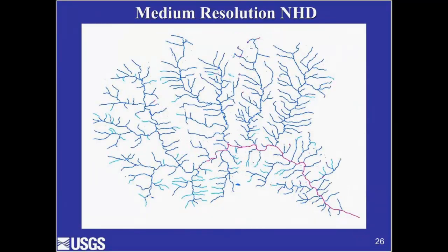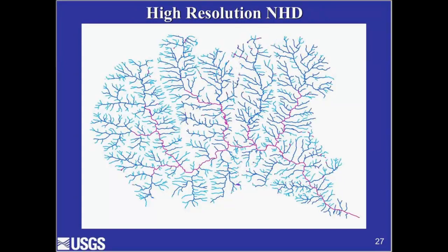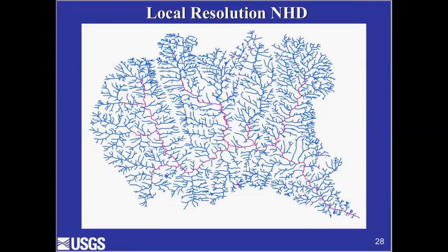One of the major issues in mapping hydrography is to determine how much detail to show. The fractal nature of flow networks means that we can map streams down to an extremely dense level, but the cost to collect, manage, and utilize such data is beyond the resources available. At 1-to-100,000 scale we see one density of streams; increasing resolution to 1-to-24,000 scale shows a denser pattern, and 1-to-5,000 scale denser still. Scientists and managers are analyzing the landscape at ever-larger scales and demanding more data, and vastly improved methods are making this level of data more affordable.